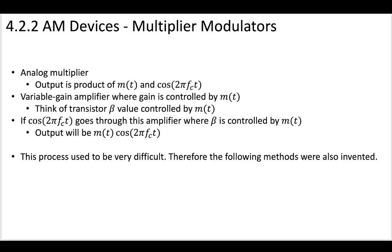One way to do this is to multiply the message using a multiplier modulator — think of a variable gain amplifier where the gain is controlled by the message. If you think back to your electronics class discussing beta in a BJT amplifier, you could think of a transistor amplifier circuit where you control the value of beta using the message. The message has some voltage associated with it, which controls your beta value. If your cosine carrier wave goes through an amplifier where beta is controlled by the message, you get an output that is the message multiplied by the cosine at the carrier frequency.